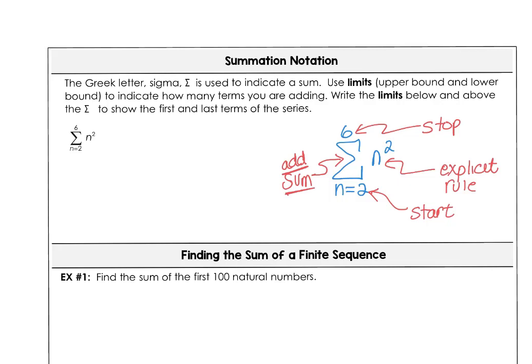That big Greek letter sigma tells us to add or to sum. So 2 squared is 4, 3 squared is 9, 4 squared is 16, 5 squared is 25, and 6 squared is 36. When we sum up all those terms, the sum of the series is 90. This is called an arithmetic series.